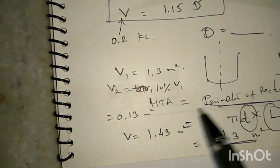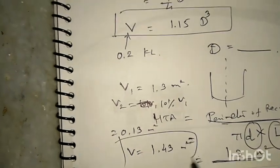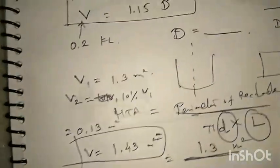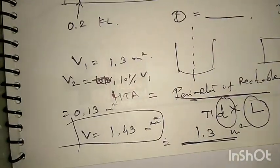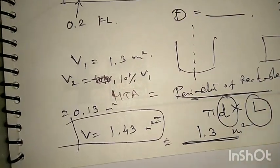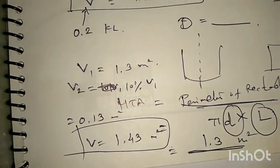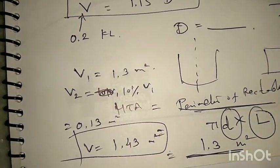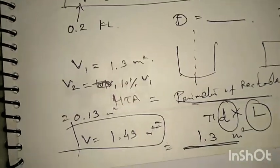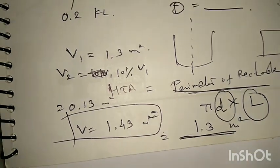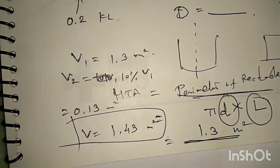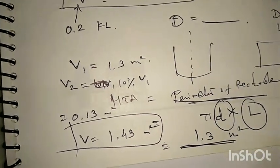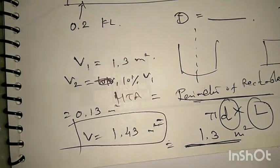This is the way to calculate the heat transfer area of a reactor without needing D and L values separately — just from the volume of the reactor. Thank you so much.